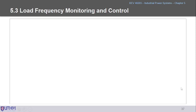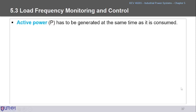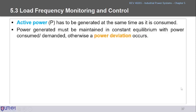Voltage depends on changes in reactive power Q, while frequency depends much on changes in active power P. That is why active power influences system frequency and we need to keep it balanced — otherwise we will have power deviations in the active power.